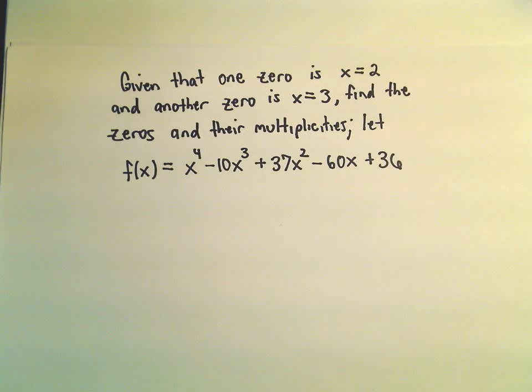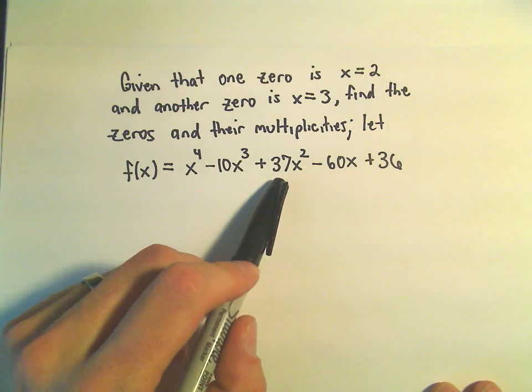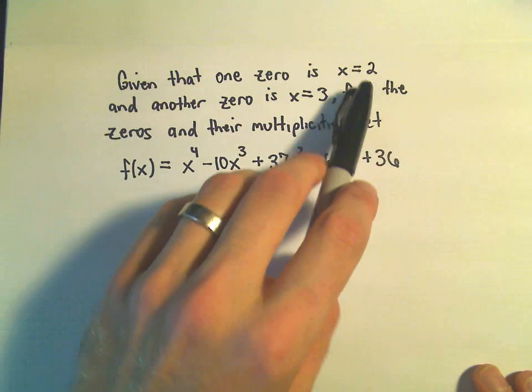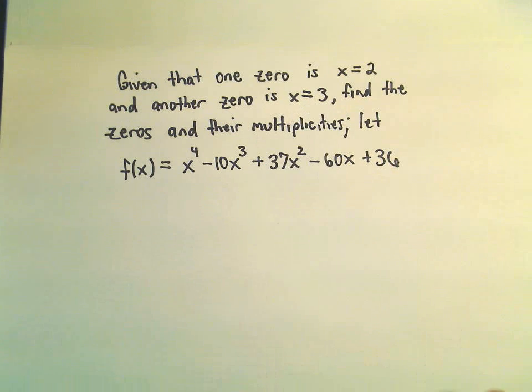So suppose we have this polynomial x to the fourth minus 10x cubed plus 37x squared minus 60x plus 36. And suppose we know that we've got two zeros: x equals 2 as a zero and also x equals 3 as a zero. And we want to find the other zeros, if there are any, and their multiplicity.